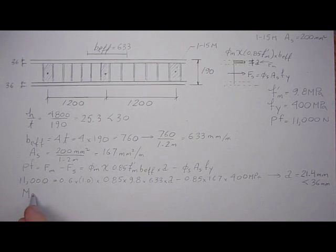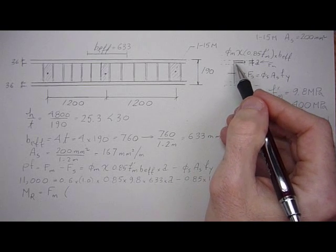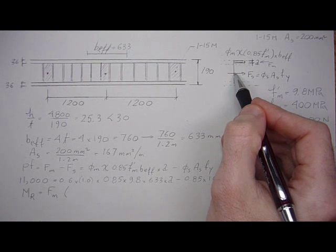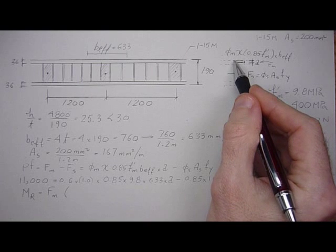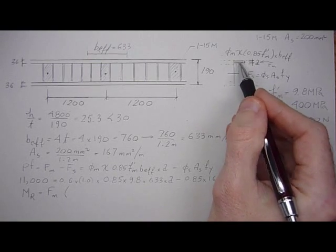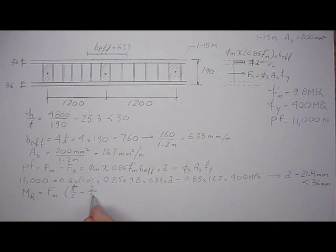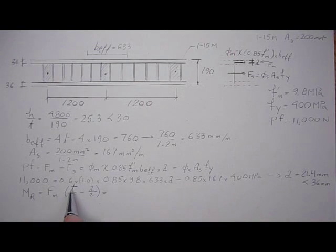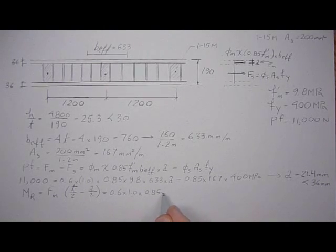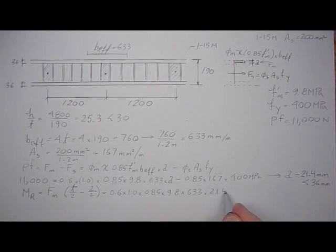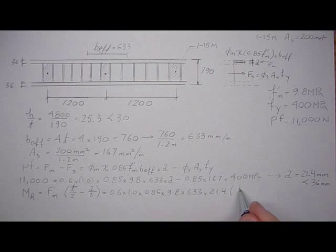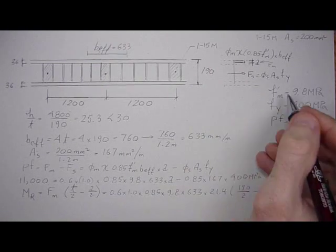The moment resistance is going to be the force in the masonry times the lever arm between here and here. Because if we take moments about here, we can take this distance here, half of 190, minus half of A over 2, to give us the lever arm. So, it's the thickness of the block over 2 minus A over 2. And the force in the masonry is this here. It's going to be 0.6 times 1 times 0.85 times 9.8 times 633 times A, 21.4. And then T over 2 is 190 over 2, minus A over 2, which was just solved by 21.4.